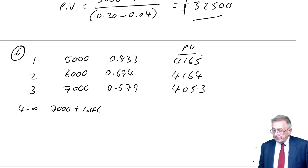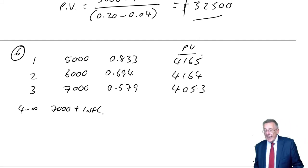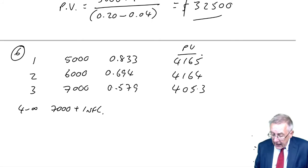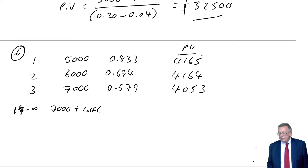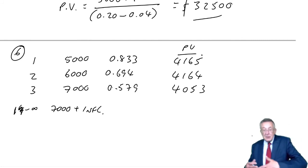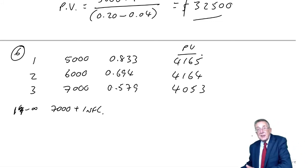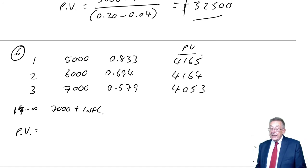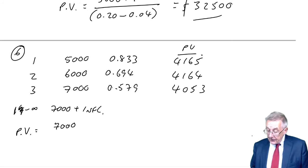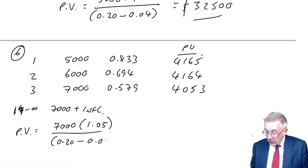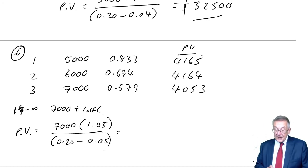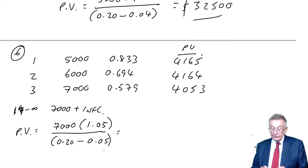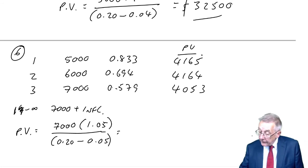The problem comes with this inflating perpetuity. Be very careful here with the timings. Had it been 1 to infinity, there'd be no problem — it would be just like example 5 with different numbers. 7,000 at current prices, but in one year 7,000 plus 5% inflation, in two years plus two years at 5%, and so on. Had it been 1 to infinity, we'd simply say: present value equals 7,000 times 1.05 over 0.20 minus 0.05, which gives us 49,000.